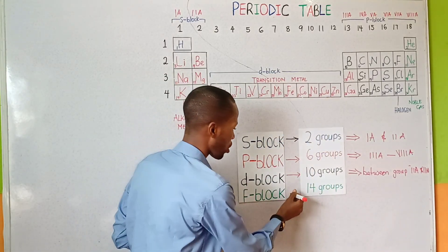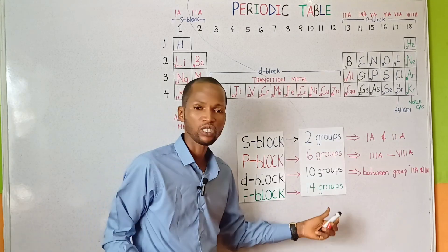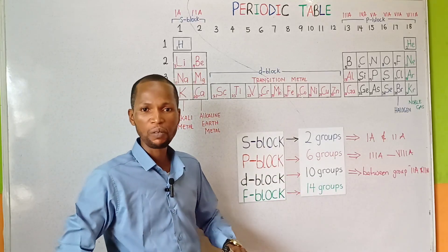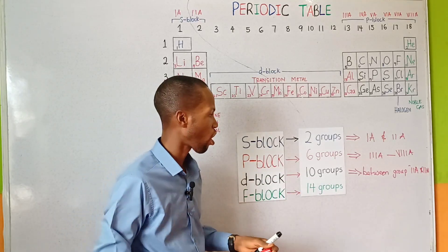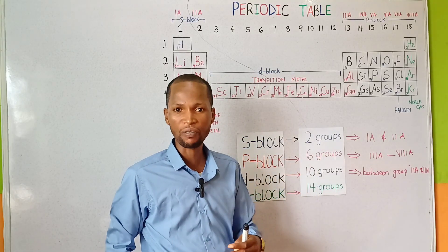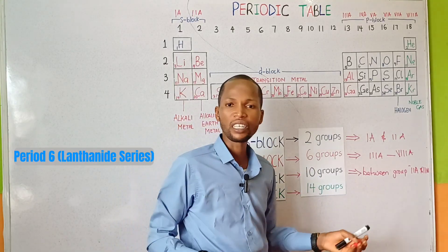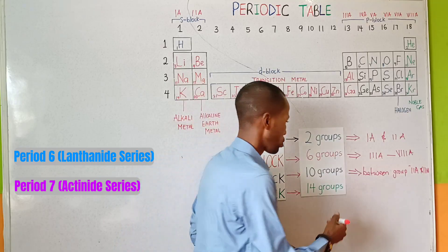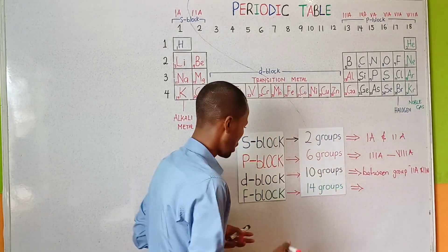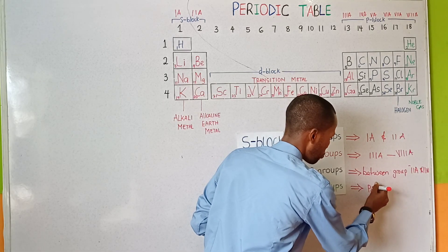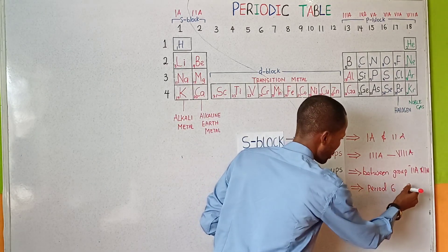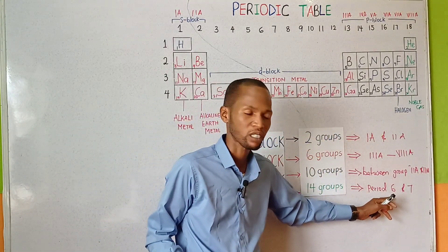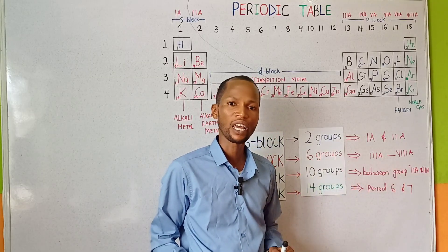We also have the F block elements, which comprises of 14 groups. The F block are found as a separate body below the main periodic table, which comprises of period 6 and period 7. Period 6 is the Lanthanide series, while period 7 is known as the Actinide series.